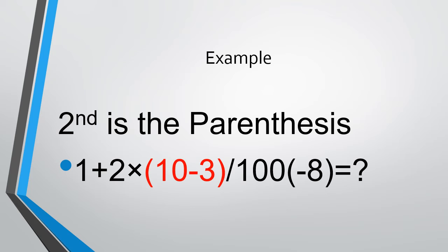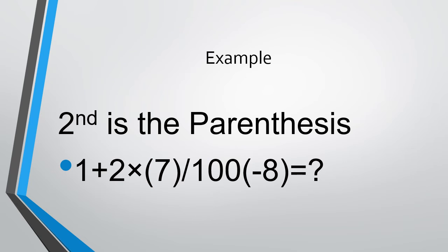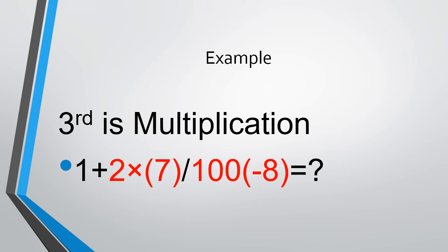Next you do the parentheses. In this case, in the parentheses we got 10 minus 3. When you calculate that out, you get 7.